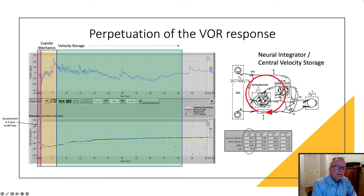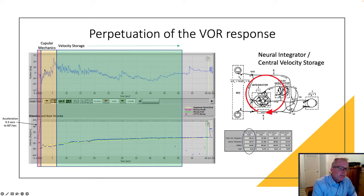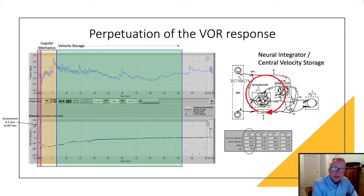That's the velocity storage mechanism we just talked about in reference to phase. In fact, they are related in a very interesting way. You have a cupular mechanics period of six seconds, and then you have this velocity storage period — and this is what we're actually asking the 60-degree step test to measure.